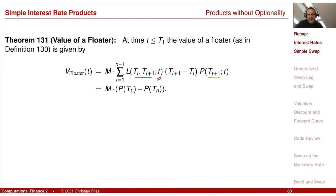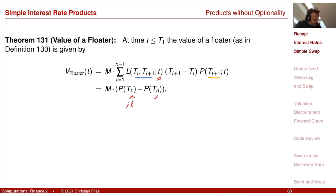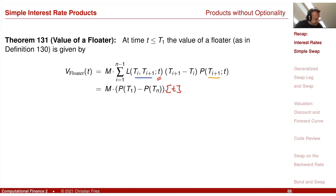That was a very nice result. We can value paying a stochastic object in the future by looking at L today, which is derived from zero-coupon bond prices today. Combined with our lemma, we could also value paying the backward rate.